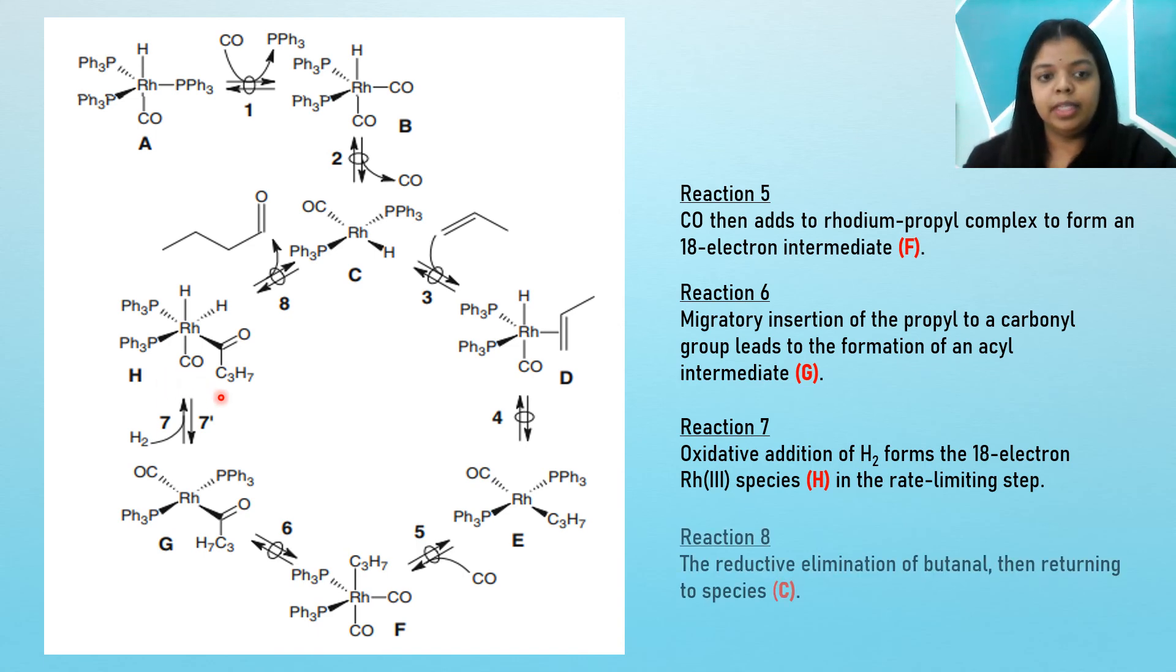From this species, we can finally obtain our final product, butanal, via reductive elimination. The reductive elimination of species H will give butanal and the rest of the complex will return to the initial complex, which is species C.